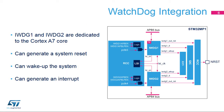The STM32MP1 includes two Independent Watchdogs, or IWDG, dedicated to the Cortex-A7 core. Both are using the Low-Speed Internal Oscillator as a watchdog clock. When an Independent Watchdog is enabled, it forces the activation of the Low-Speed Internal Oscillator.